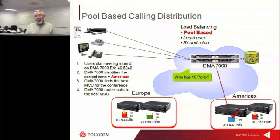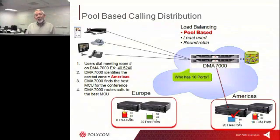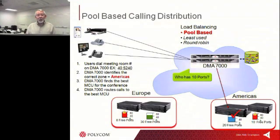That pool requirement could be a geographic requirement. For example, if we had a bunch of people in Europe attending a call, it would be silly and wasteful of bandwidth to have them call into the U.S. It would be better for them to call a centralized bridge in Europe and then do a cascaded call — a single call back into the U.S. Those are things that DMA can set up and help you do.